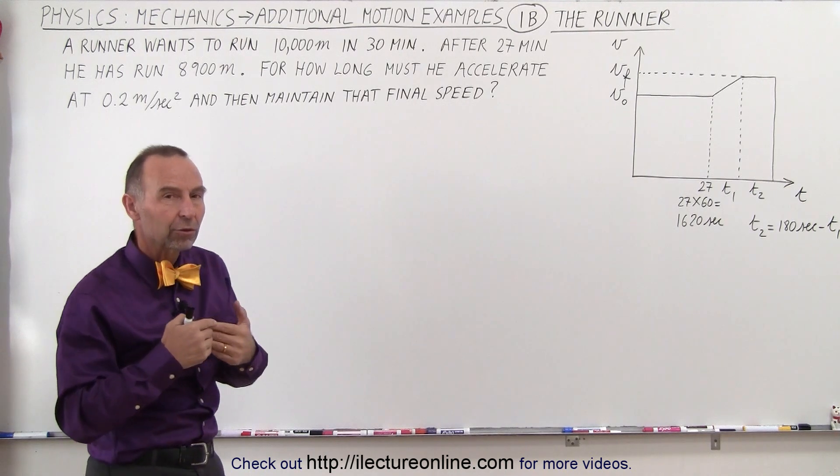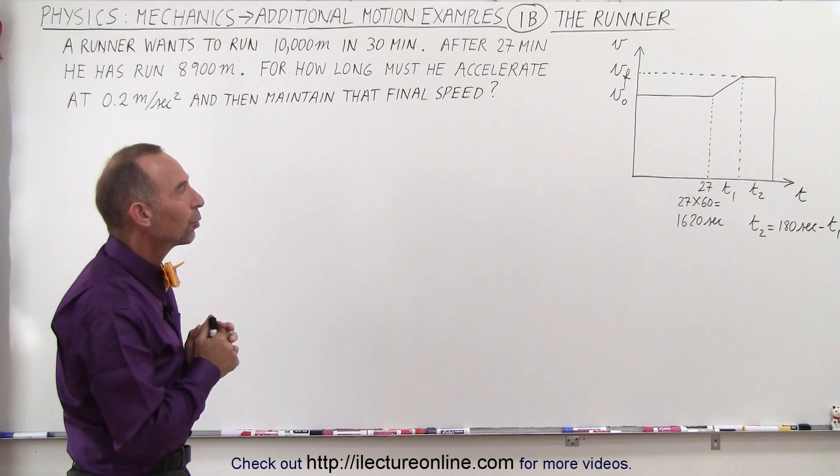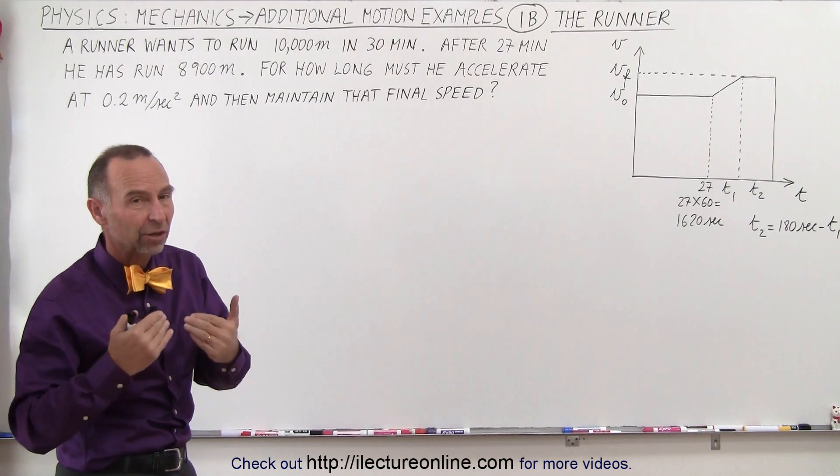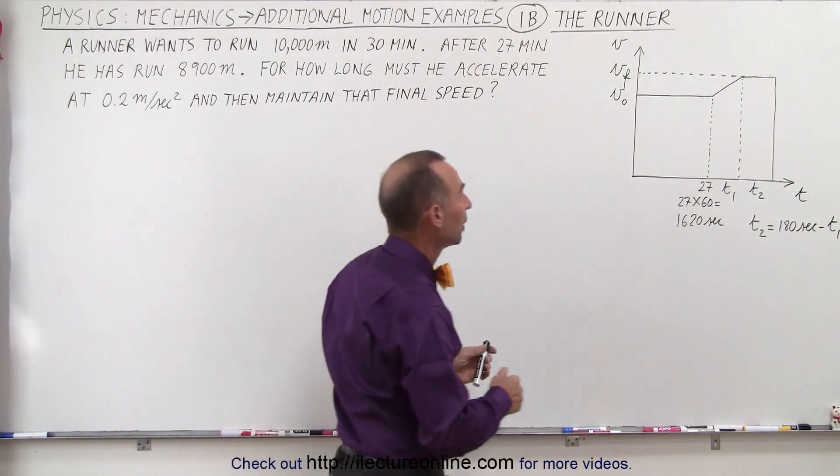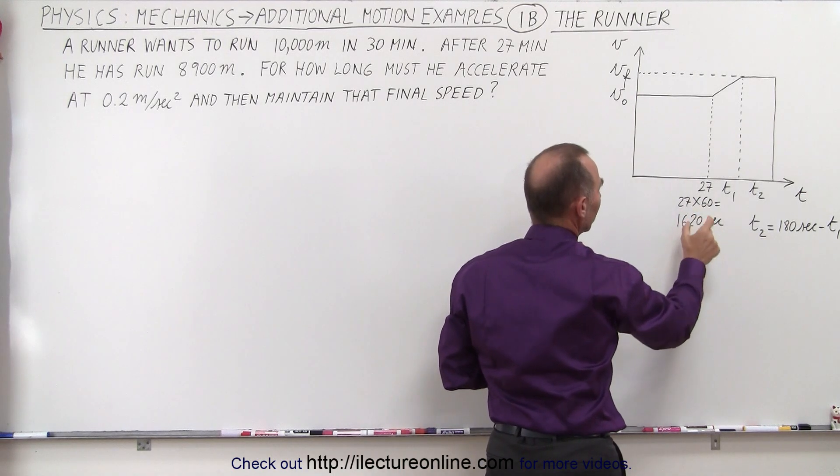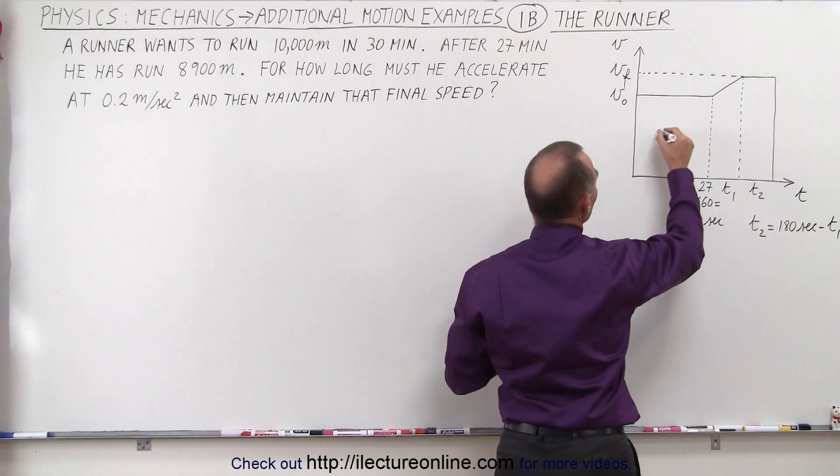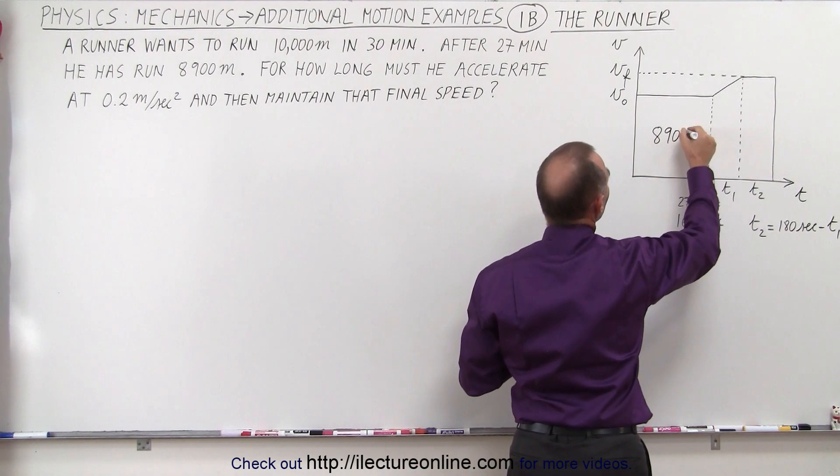So instead of doing this graphically, in this example we're going to do it simply using the equations. We use the graph so we can understand what is really happening. So he's traveling at some initial velocity for the first 27 minutes, which is 1,620 seconds, and he covers a distance of 8,900 meters.